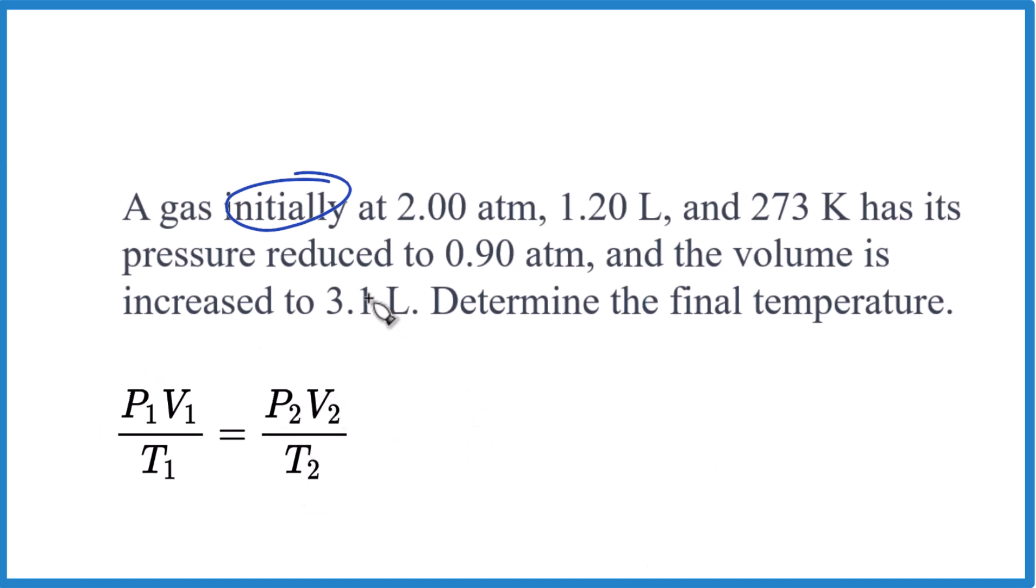If we look at what we're given here, we have atmospheres (that's our pressure), liters (volume), and Kelvin (that's our temperature). We reduce the pressure and the volume is increased, and we want to find that final temperature.